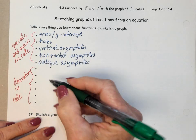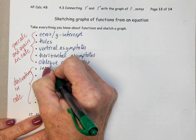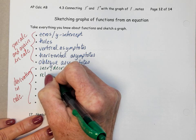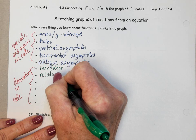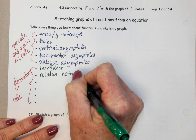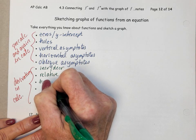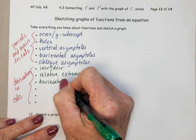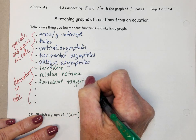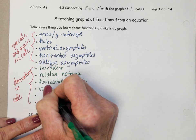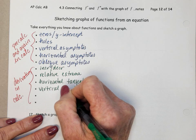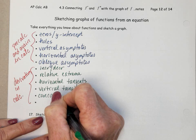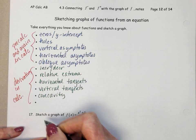The rest of the stuff you have learned this year in calculus when we've been talking about derivatives. And the stuff that we got from here we talked about increasing versus decreasing, relative extrema, horizontal tangents, vertical tangents, concavity, and points of inflection.